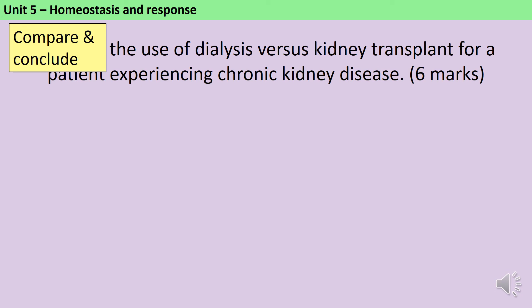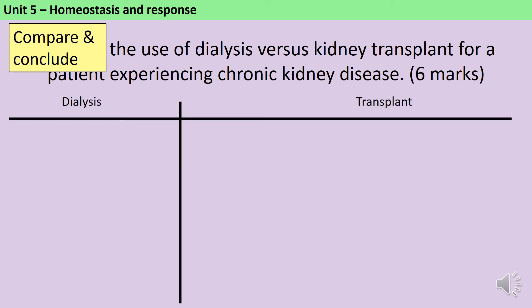In this question we're asked to evaluate the use of dialysis and transplants for treating somebody with long-term kidney disease. The first thing to do with any question asking you to compare is to split your page in two, making it easy for your examiner to see that you've covered both sides. You don't need to write an essay — examiners love tables and bullet points. To start with, provide some information to show you know what these two techniques are: dialysis uses a machine with a partially permeable membrane to filter the blood, whereas a transplant involves surgery to implant a new organ that's been tissue typed to match the patient.